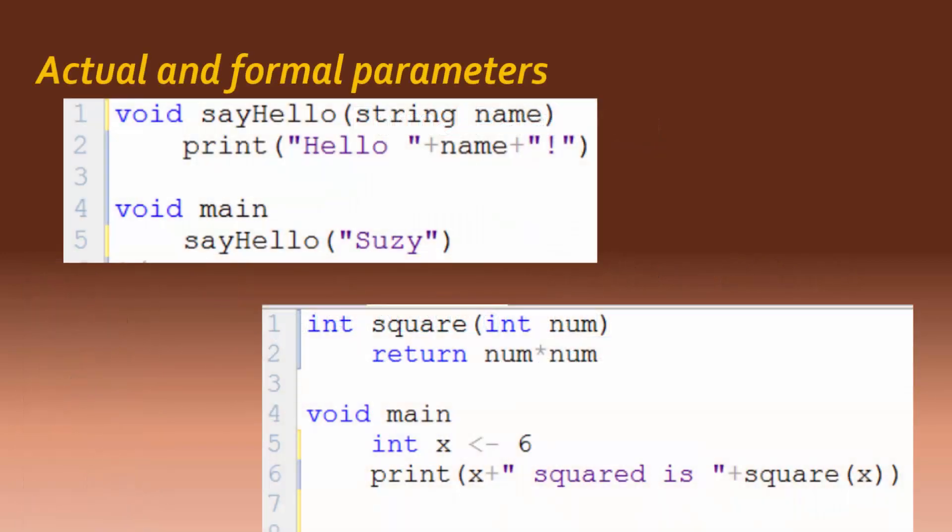In these two program examples we studied previously, we saw instances of actual and formal parameters. In the first method, Suzy is the actual parameter, since it is in the method call, and StringName is the formal parameter, since it is in the method header.